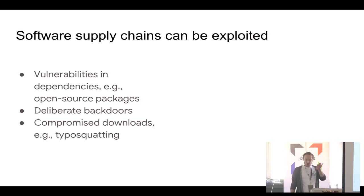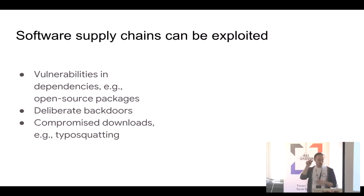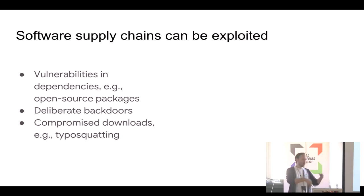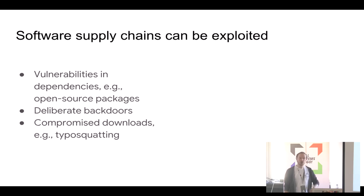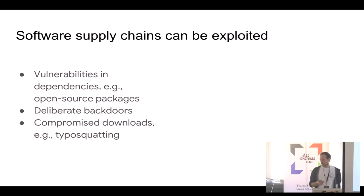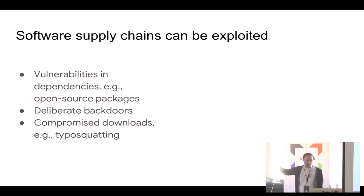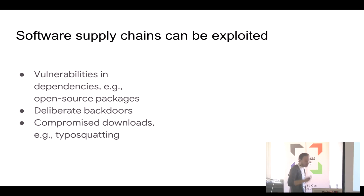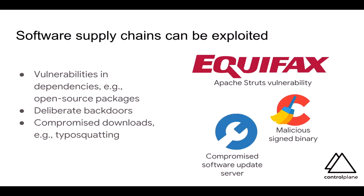Typo squatting is when a library which is hyphenated is then re-uploaded without the hyphen, so there are two parallel versions. People can happily resolve that dependency — it's got exactly the same code. And once it's got 100,000 downloads a day, they add some code which, for example, captures the environment and posts it off to a remote endpoint. That means if you're on a build server and you're deploying to production, your build keys are being posted remotely.